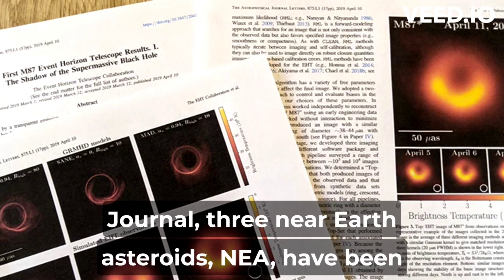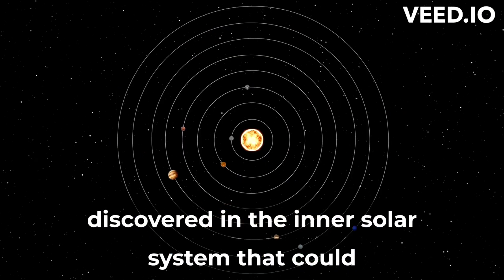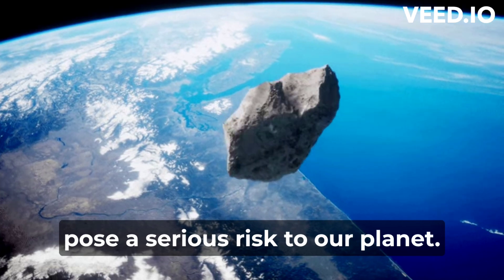According to new data published in the Astronomical Journal, three near-Earth asteroids (NEAs) have been discovered in the inner solar system that could pose a serious risk to our planet.